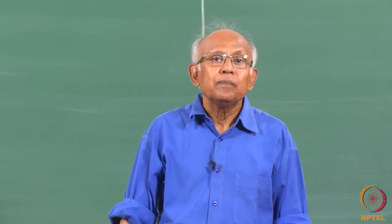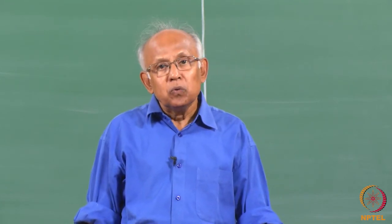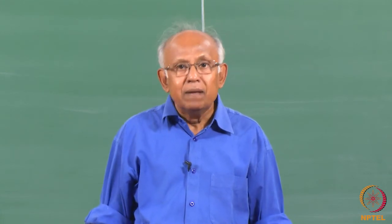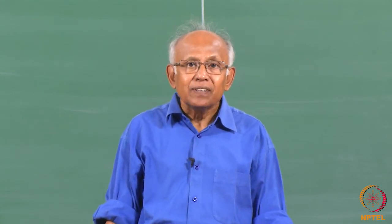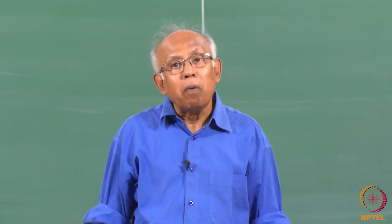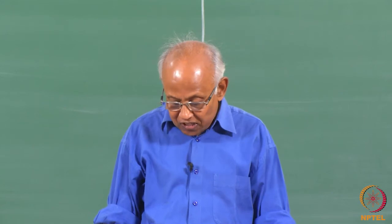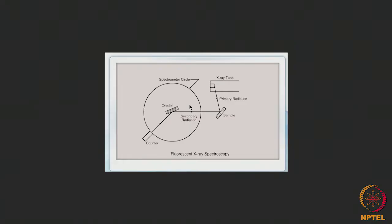On the other hand, what we do is use the element or a group of elements present in a substance, bombarded with X-rays from an X-ray machine. This bombardment of the sample by primary X-radiation from the X-ray tube will produce the fluorescent radiation, also known as secondary radiation.